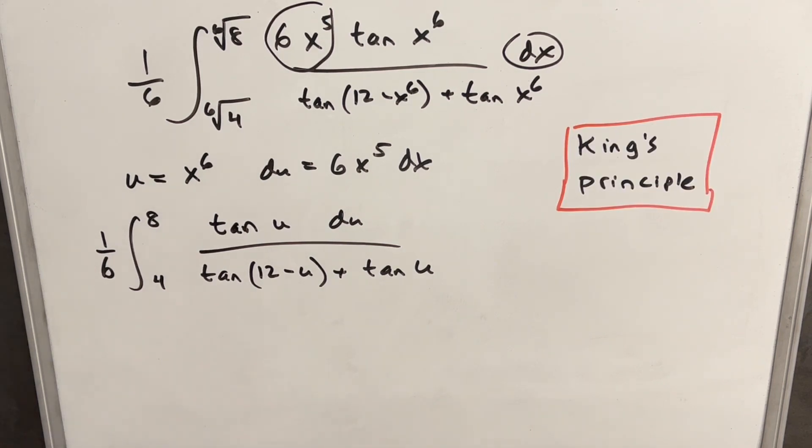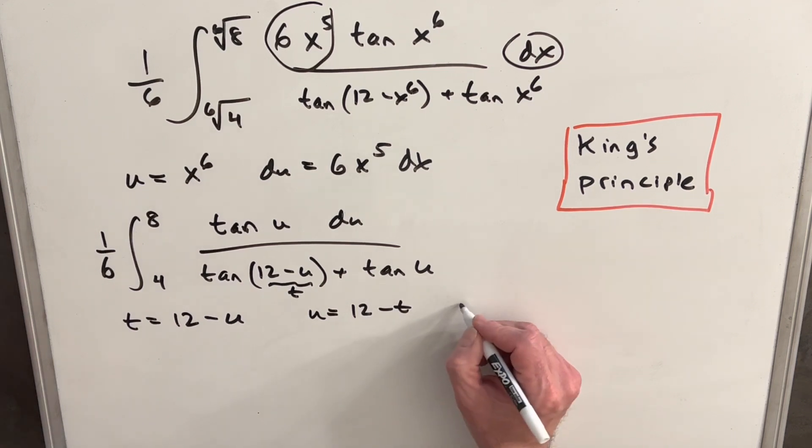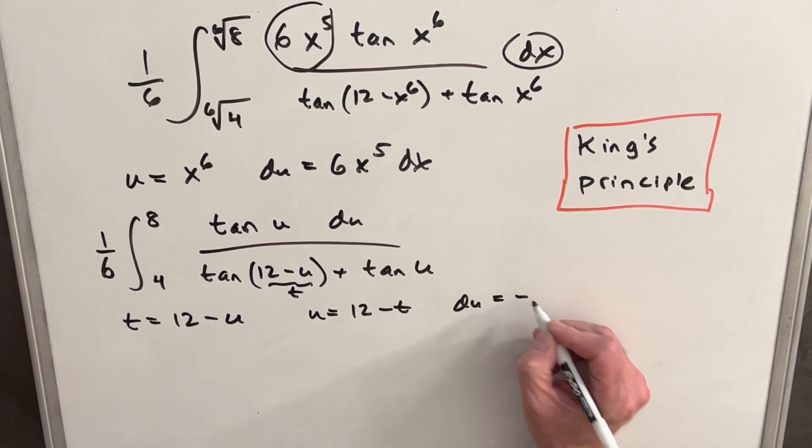So the key to the king's principle is going to be making a substitution. We already used u, so we're going to use t. But what we want to do is we want to add our bounds together. So we'll have 8 plus 4, which is 12. And then we're going to subtract our variable, which is u. And of course, notice that that means we have our t right there. So that's convenient. And we can also rewrite this in terms of u. And we're going to have, this is going to be, u is going to be 12 minus t. And then we'll get our du, which is actually just minus dt.